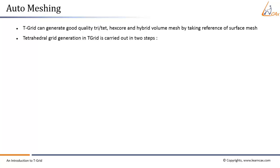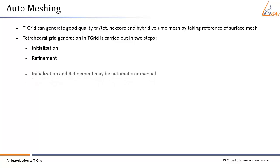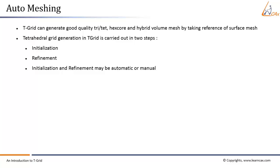Tetrahedral grid generation in T-grid is carried out in two steps. First, initialization: it is the first step in volume mesh generation where T-grid automatically adds a small number of nodes in the interior of the domain. In this process, highly skewed and coarse elements are formed. Second, refinement: it improves the quality and density of the grid using global and local refinement. Local refinement allows refining cells in a specified region and adds nodes and cells to the initial mesh. Initialization and refinement may be automatic or manual.